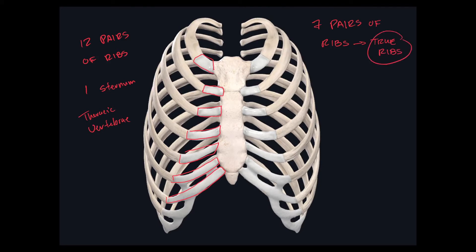The last five pairs are called false ribs. They're called that because their costal cartilage does not unite with the sternum, as shown with this green. They unite with other costal cartilages; they don't unite directly to the sternum itself.